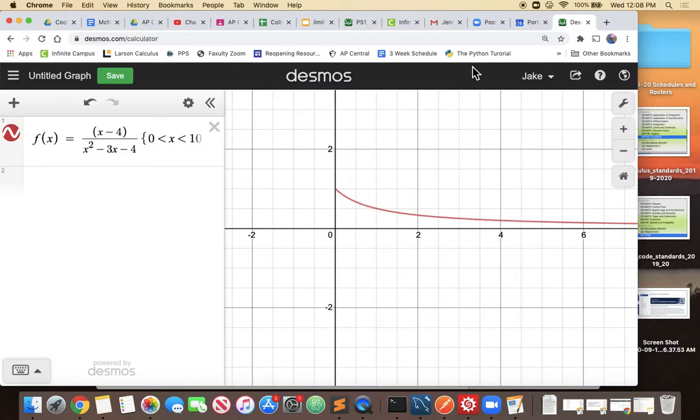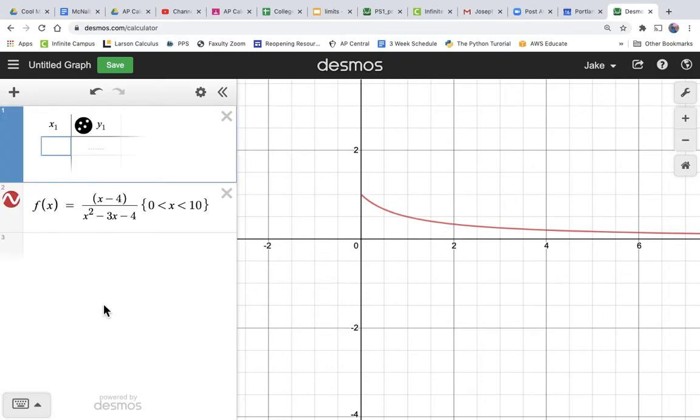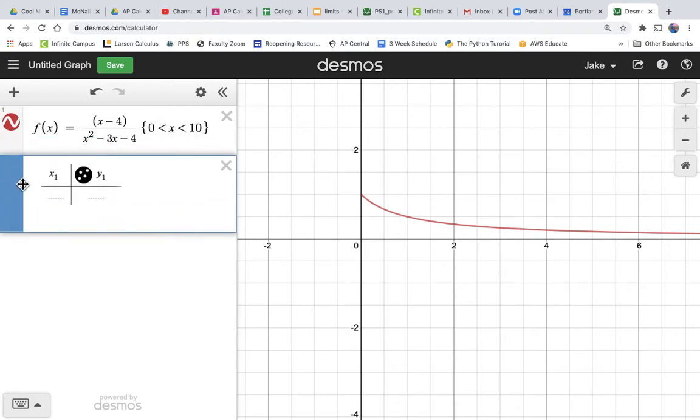We were in the last Desmos video where we had already graphed this function. Now we want to create a table of values. Desmos can do it. Hit the plus and select table. We actually want the table beneath this function definition, so we can just grab it and drag it down.